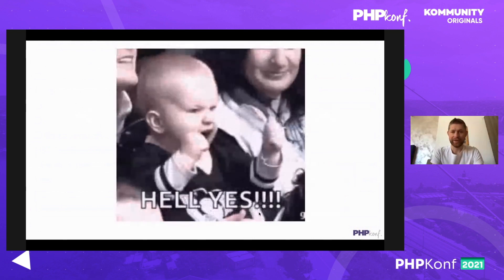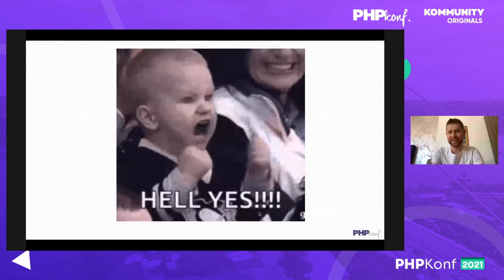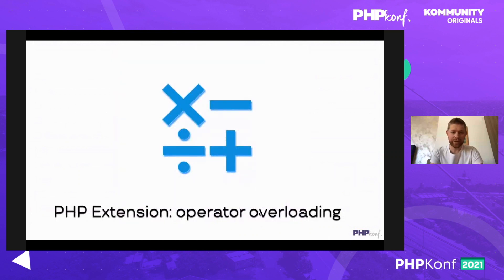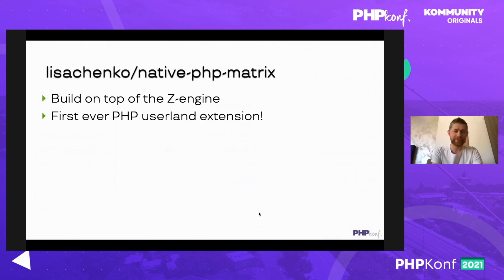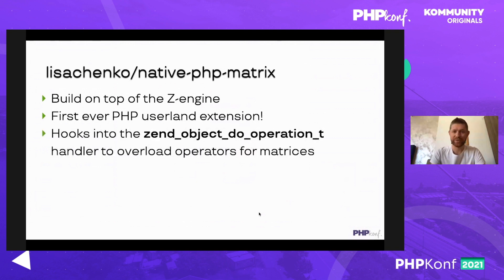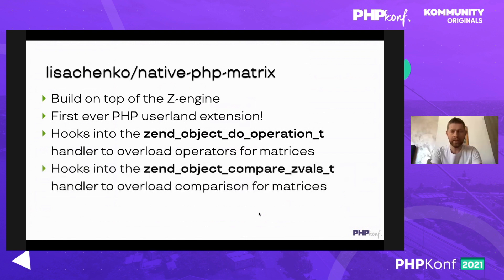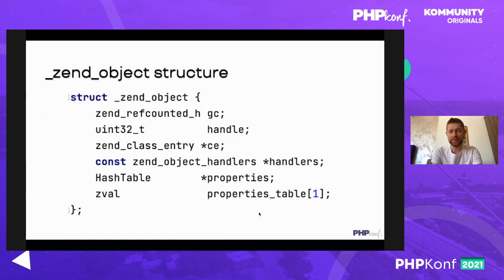That was a simple example, but my idea is: what if we can create PHP extensions with ZEngine directly from userland? We have access to all low-level data, we have access to PHP itself — why not? I would like to start with a PHP extension with operator overloading. You can check this native PHP matrix library in my GitHub repository — it's built on top of ZEngine and is the first ever PHP userland extension. Under the hood it hooks into the specific `zend_object_do_operation` hook to overload operators for matrices, and also overrides the `zend_object_compare_zvals` hook for matrix comparison.